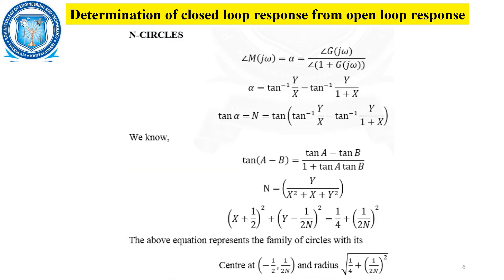Similarly, for N circles, it is the angle value, taken as α. We take the tangent of both sides and set tan(α) = N. Using the tan(A − B) identity and substituting values, we get N = Y / (X² + X + Y²). Cross multiplying and collecting squared terms, we arrive at: (X + 1/2)² + (Y − 1/(2N))² = 1/4 + (1/(2N))².